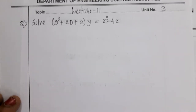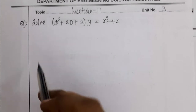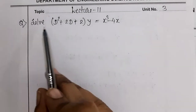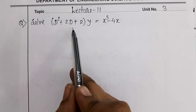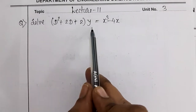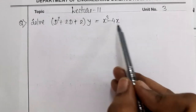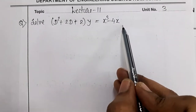Welcome to lecture number 11. Today we see some examples. The first example is: solve (D² + 2D + 2)y = x³ - 4x.